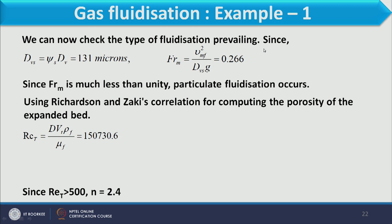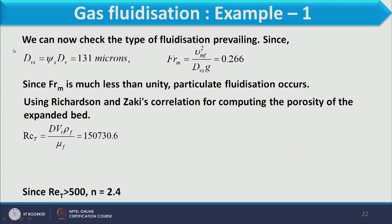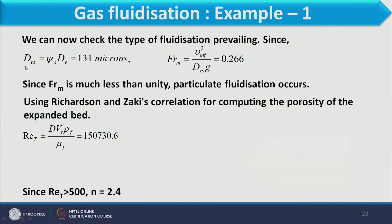We now check the type of fluidization. To calculate the Froude number we need the volume-surface diameter, defined as sphericity × volumetric diameter. As discussed in the second lecture, for non-spherical particles the diameter = sphericity × d_v, which gives 131 microns. The Froude number calculated using the minimum fluidizing velocity comes out as 0.266, which is less than 1, so particulate fluidization is prevailing.